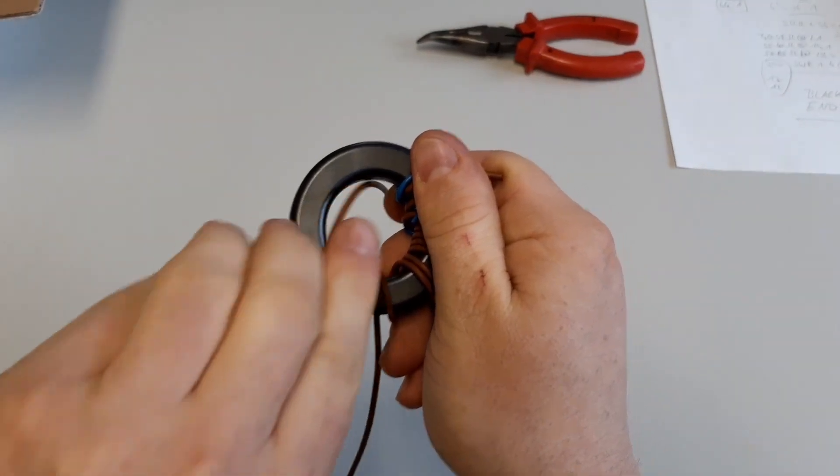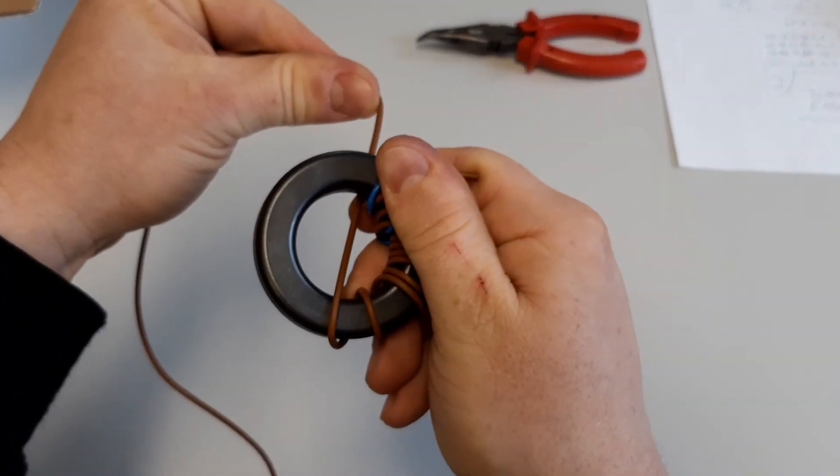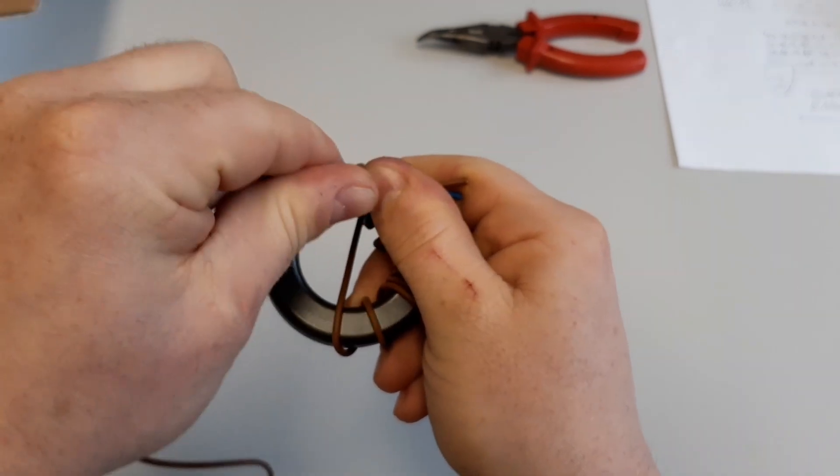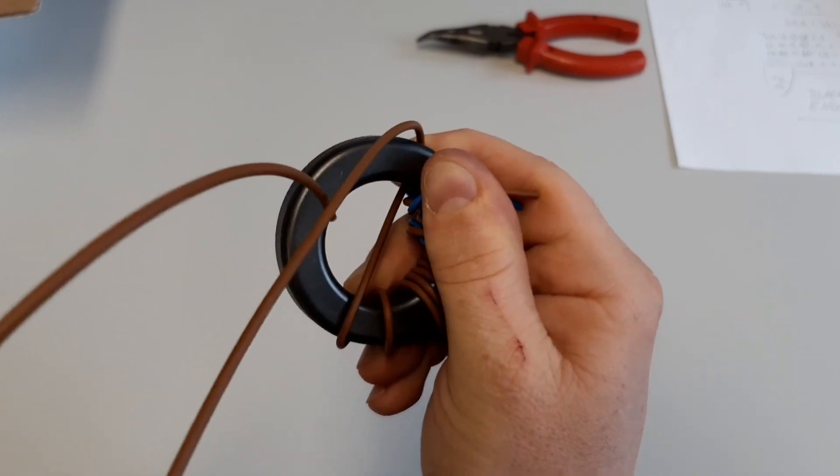In the next step I'm going through the core. That's another one, and then I go backwards seven windings again.